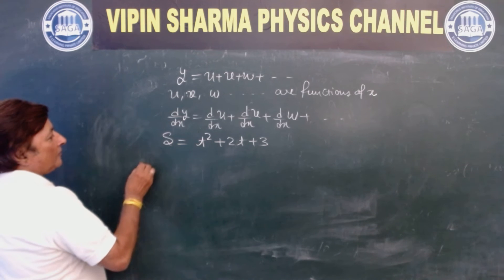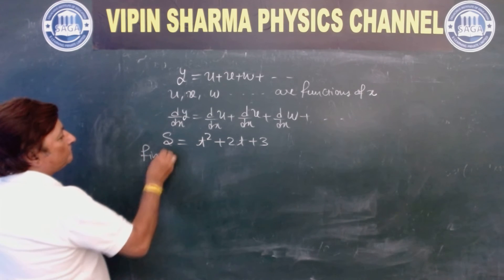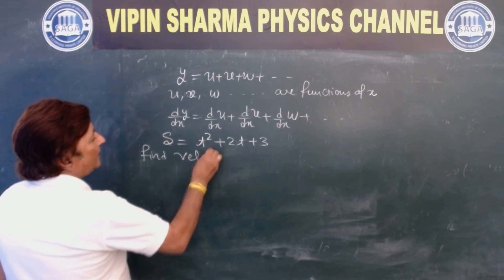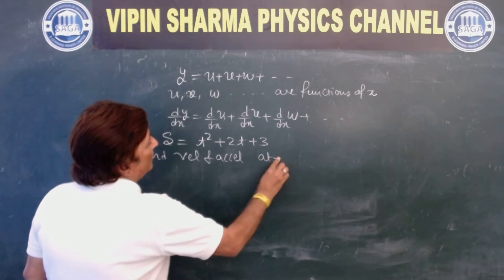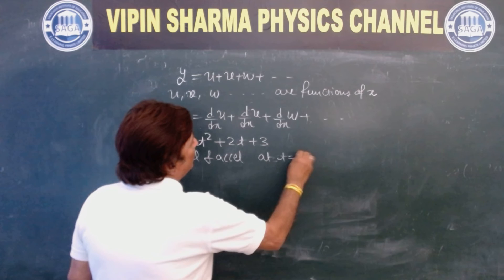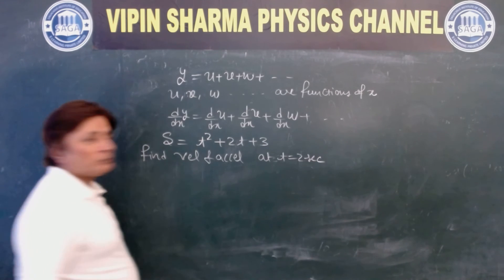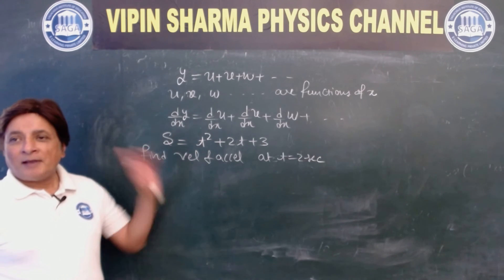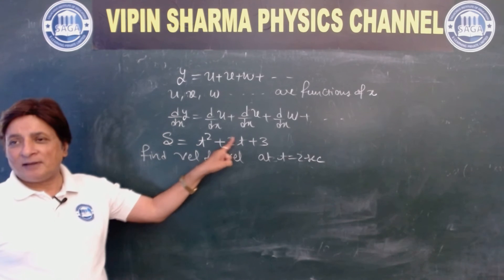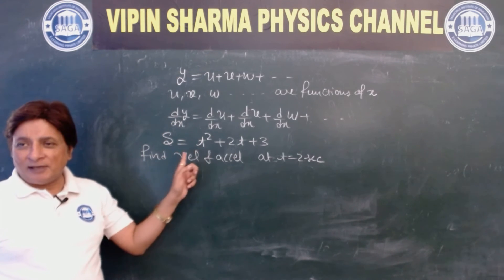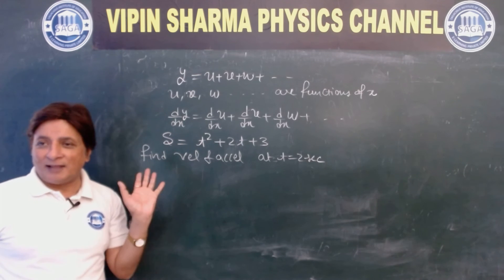Now, find velocity and acceleration at t equal to 2 seconds. And practice calculus formulas, kind of an application. So what I am going to do, in which way I am going to do?